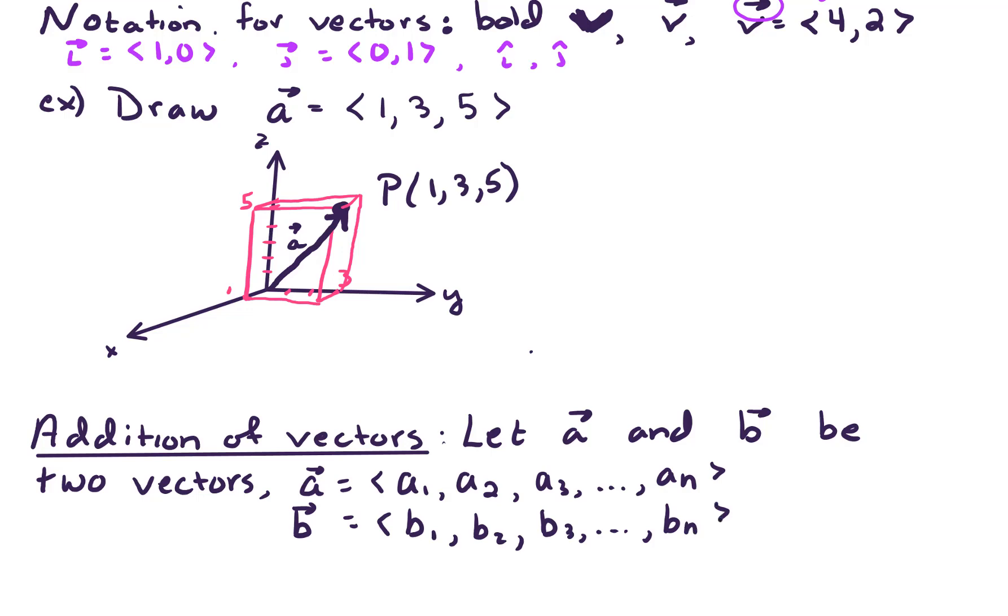Vector addition happens component-wise if we're looking at a plus b. To add up those two vectors, we're just adding up a1 plus b1 in the first component, second component a2 plus b2, third component a3 plus b3, all the way up through the nth component a sub n plus b sub n.